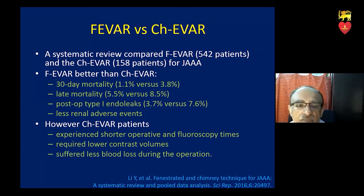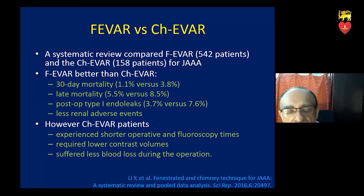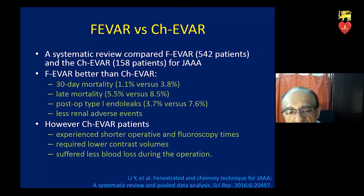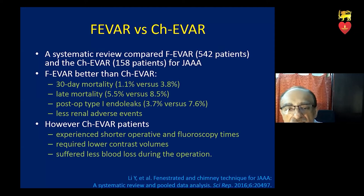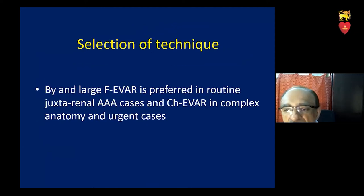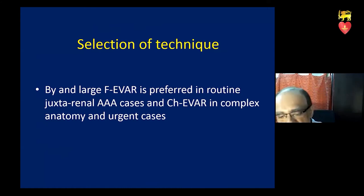The follow-up result shows the aneurysm is excluded with preserved flow into the renal arteries and superior mesenteric artery. The CT angiogram shows complete thrombosis of the sac and flow through the two limbs of the bifurcated endograft. Fenestrated repairs are generally better than chimney repairs — they have less mortality, fewer endoleaks, and fewer renal adverse events. Chimney repairs are quicker with less fluorotime, less contrast volume, and less blood loss. Fenestrated repair is preferred in elective cases, but in complex anatomy and urgent cases, we would use chimney repair.